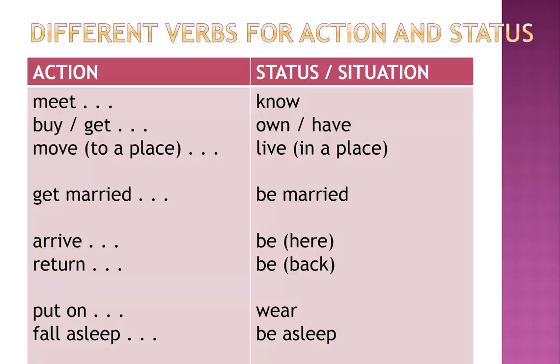In English, we use different verbs for action and status in many cases. Action: meet. Status: know. Action: buy or get. Status: own or have. Action: move to a place. Status: live in a place. Action: get married. Status: be married. Action: arrive. Status: be here. Action: return. Status: be back. Action: put on. Status: wear. Action: fall asleep. Status: be asleep.